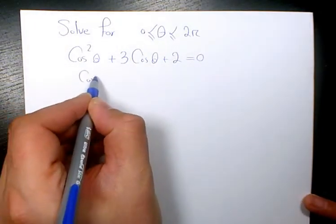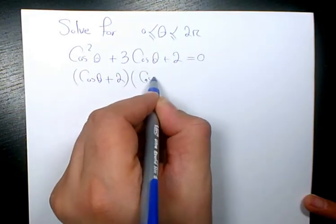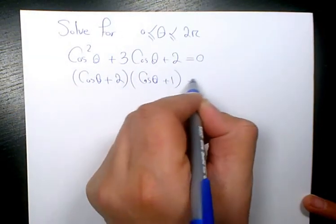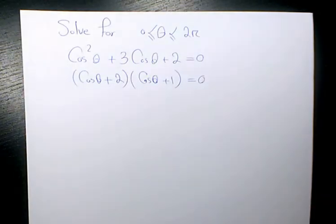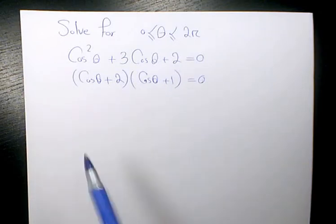So I can factor, and this equation is going to be cosine θ plus 2 times cosine theta plus 1 equals to 0. So that's the factored form of this equation. Now we have two expressions multiplied to each other. It's going to be 0. It means that either this expression is 0 or this expression.